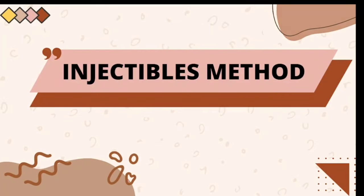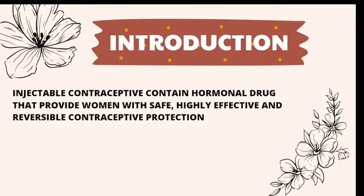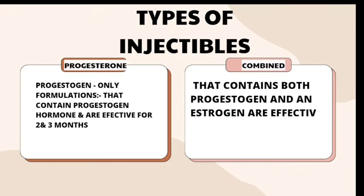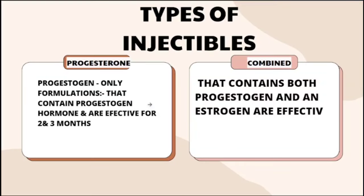The next method is injectables, which contain hormonal drugs that provide women with safe, highly effective, and reversible contraceptive protection. There are two types: progesterone-only injectables, effective for two to three months, and combined injectables containing both progesterone and estrogen. They work by making the cervical mucus thick, creating resistance for sperms and preventing them from moving into the uterus, and also by preventing ovulation.